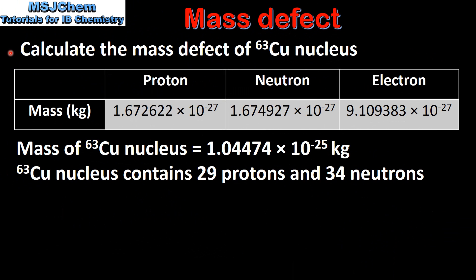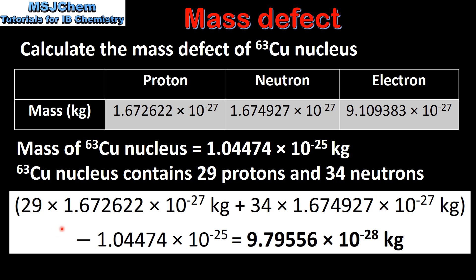In our next example we will calculate the mass defect of a copper-63 nucleus. The mass of a copper-63 nucleus is 1.04474 × 10⁻²⁵ kg. A copper-63 nucleus contains 29 protons and 34 neutrons. To calculate the mass defect, we multiply the mass of a proton by 29 and add that to 34 times the mass of a neutron. We then subtract the mass of the copper-63 nucleus to give us our mass defect.